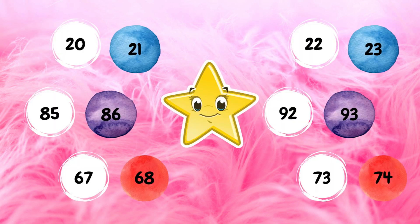We're going to start by studying 'before.' You can see the numbers written in colored circles. For example, the first number in the colored circle is 21. Now I am going to subtract 1 from 21 and I will get 20. That is how we know what comes before a number.